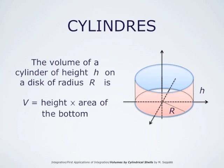To this end, we must recall that the volume of a cylinder of height h on a disk of radius r is height times the area of the bottom. That is, the volume is pi times r squared times h.